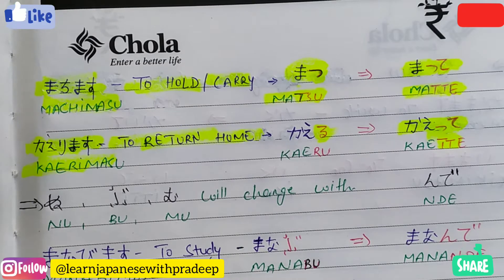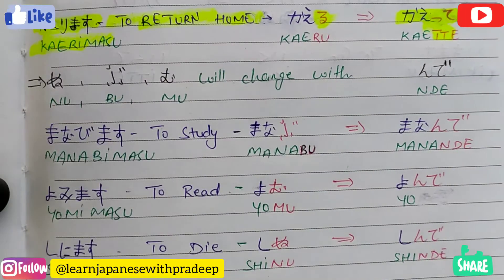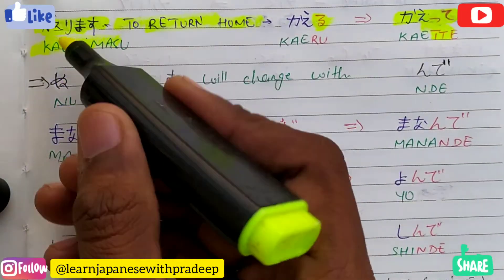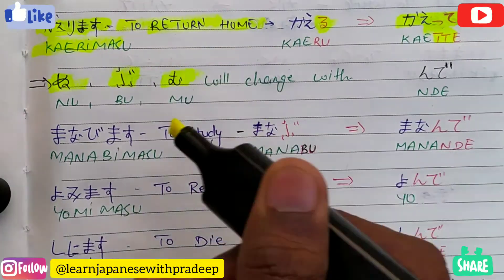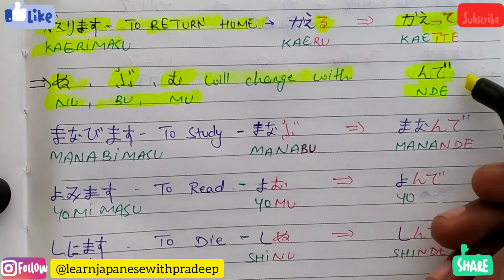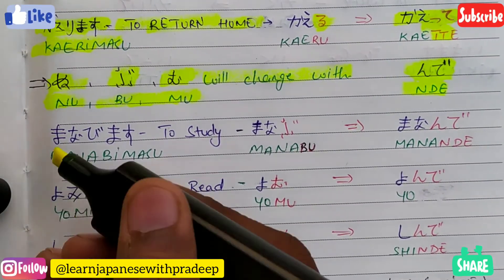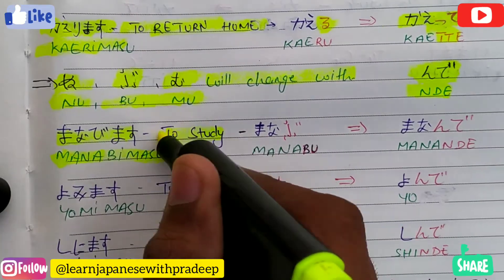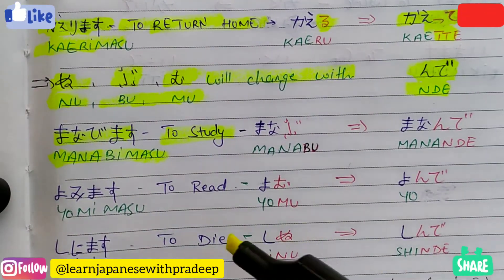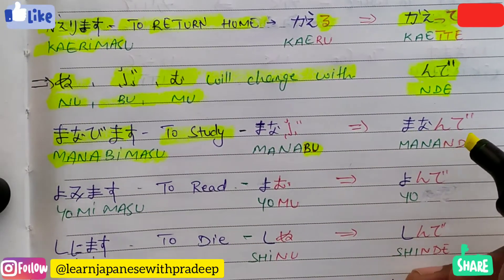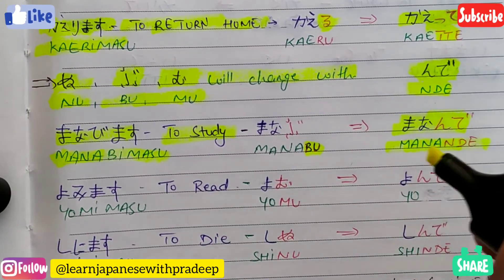Now let's move to the next line. Verbs which are having bu, mu, or nu at the end in dictionary form will change with nde. For example, manabimasu means 'to study'. Dictionary form is manabu, and since it ends in bu, the te form of manabimasu becomes manande.